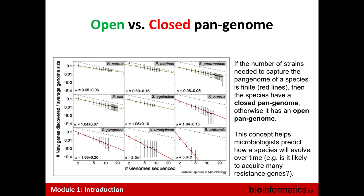The pan genome concept helps microbiologists predict how a species will evolve over time — whether it has an open pan genome with lots of horizontal gene transfer and genomic changes, or a closed pan genome meaning a more stable genome. This information is helpful in interpreting your genomic epi results as well.